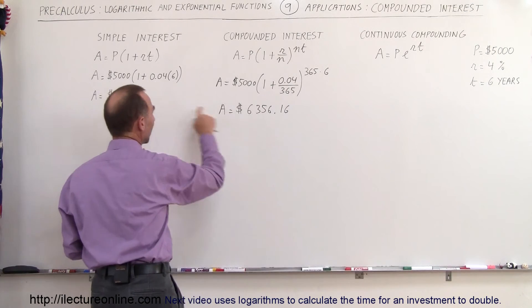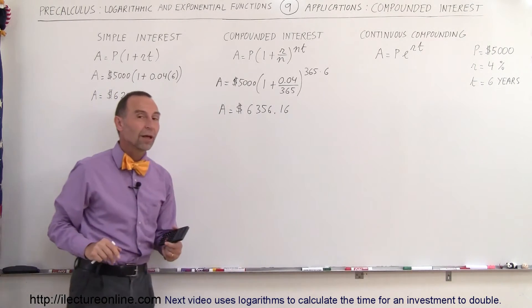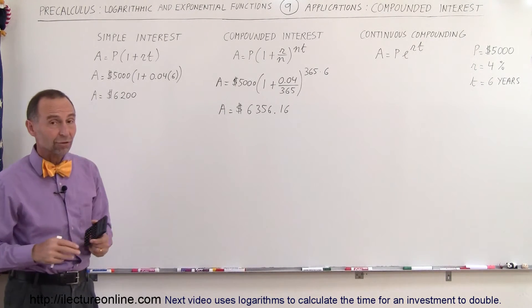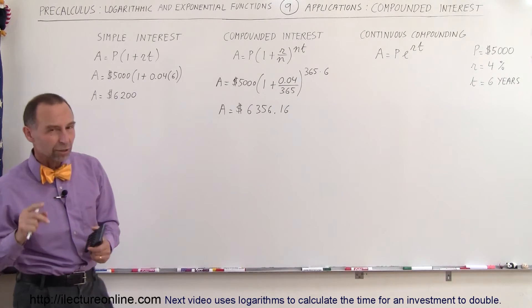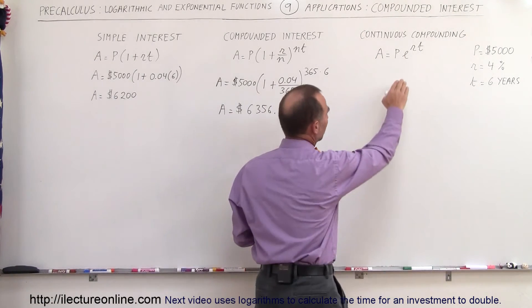So you can see that when you compound, you earn more interest. Now, a nice quick approximation of the amount that you end up with is what we call continuous compounding, and we use the exponential function for that.